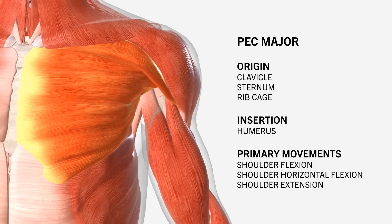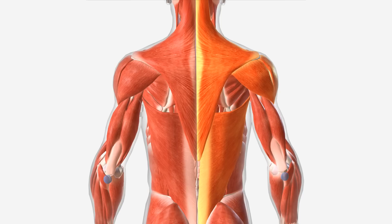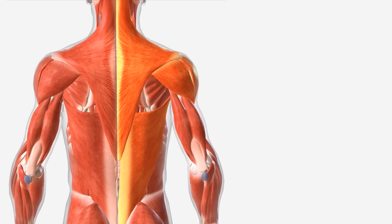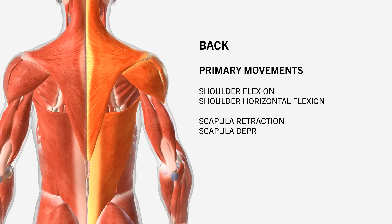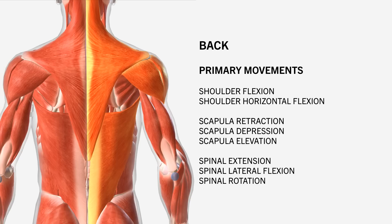Getting even more complex than the pec major, let's look at the entire back muscle group. The back consists of multiple muscles, primarily the lats, traps, rear delts, and spinal erectors. Without going into the anatomical details of each muscle, the back has many different muscle attachment sites and multiple muscle fibre orientation angles. These muscles collectively act to flex and horizontally flex the shoulder, retract, depress, and elevate the scapula, and to extend, laterally flex, and rotate the spine. As we can see, the back muscle group has many more functions compared with other simpler muscles.